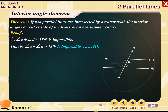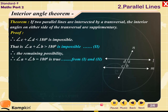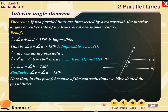That is, angle A plus angle B being greater than 180 degrees is impossible. Therefore, the remaining possibility — angle A plus angle B is equal to 180 degrees — is true. Therefore, angle A plus angle B is equal to 180 degrees. Similarly, angle C plus angle D is equal to 180 degrees. Note that in this proof, because of the contradictions, we have denied the possibilities that angle A plus angle B is more than 180 degrees and angle A plus angle B is less than 180 degrees.